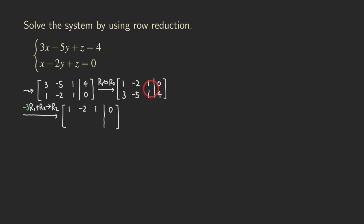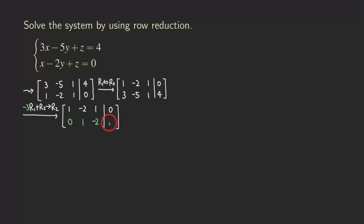If you multiply the whole first row by negative 3, you get 0 here. Then negative 2 times negative 3 gives you 6, and 6 minus 5 is positive 1. Then 1 times negative 3 is negative 3, plus 1 gives negative 2. And because that's a 0 here, you just add 0 to the 4, which still gives you 4.